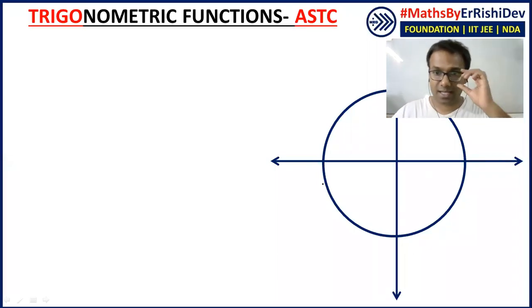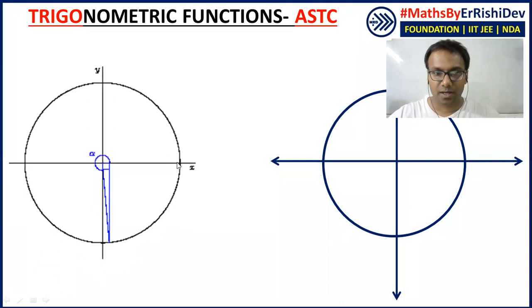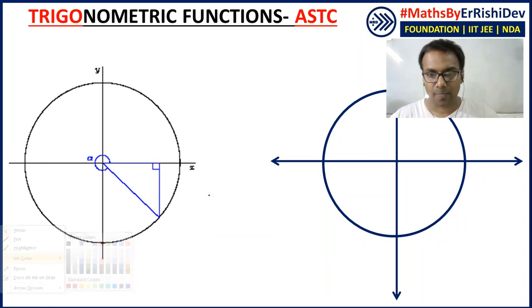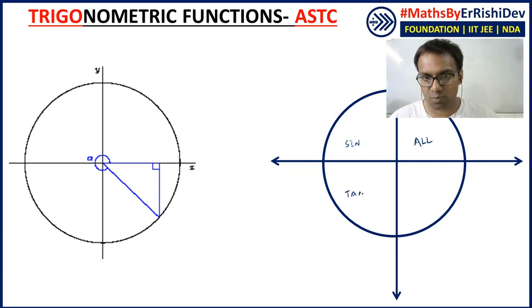In the previous class, we learned about ASTC and how it works. We saw the rotation and what we learned. Everything is positive in the first quadrant, all positive. From S, only sine is positive. In T, only tan is positive. And in C, only cos is positive.